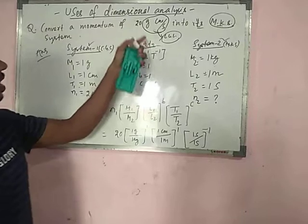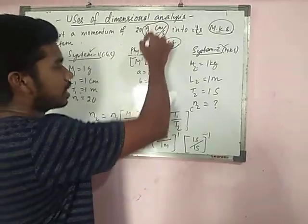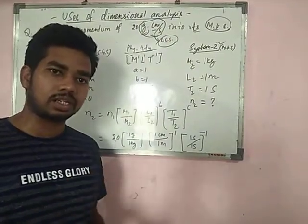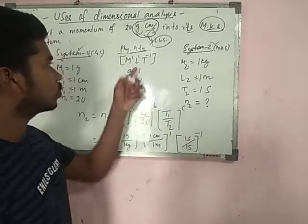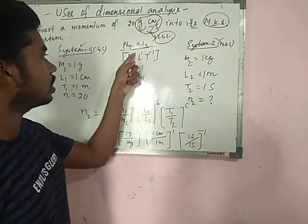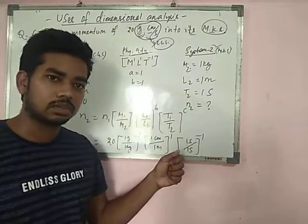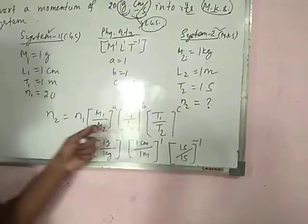The physical quantity is momentum. From the unit gram-centimeter per second, we know it is momentum: mass times velocity. The dimension is M¹L¹T⁻¹. So here, in the form A, B, C: A equals 1, B equals 1, C equals minus 1.